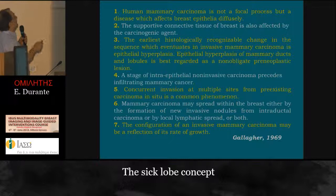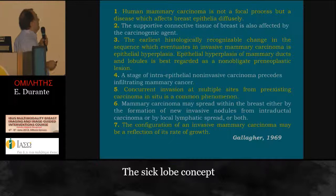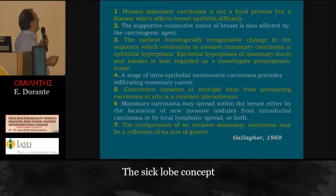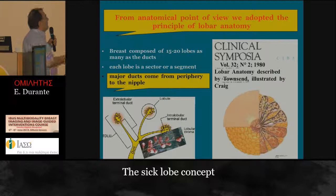Human mammary carcinoma is not a focal process but a disease which affects breast epithelia diffusely. The supporting connective tissue is also affected by carcinogenic agents. The earliest physiologically recognized change in the sequence that eventuates in invasive mammary carcinoma is epithelial hyperplasia. Epithelial hyperplasia of mammary ducts and lobules is best regarded as a non-obligate preneoplastic lesion. If you have atypical hyperplasia, it is a preneoplastic lesion. The stage of intraepithelial non-invasive carcinoma precedes infiltrating mammary cancer. Concurrent invasion at multiple sites from pre-existing carcinoma in situ is a common phenomenon, and mammary carcinoma may spread within the breast by formation of new invasive nodules from intraductal carcinoma, or by local lymphatic spread, or both. The configuration of an invasive mammary carcinoma may be a reflection of its rate of growth.